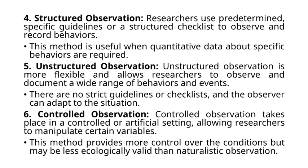Fifth: unstructured observation. Unstructured observation is more flexible and allows researchers to observe and document a wide range of behaviors and events. There are no strict guidelines or checklists, and the observer can adapt to the situation. Sixth: controlled observation. Controlled observation takes place in a controlled or artificial setting, allowing researchers to manipulate certain variables. This method provides more control over the conditions but may be less ecologically valid than naturalistic observation.